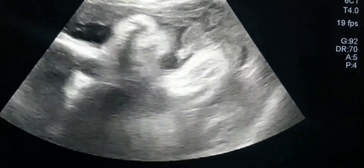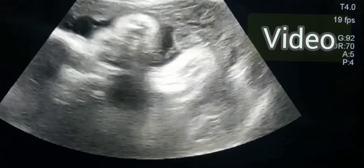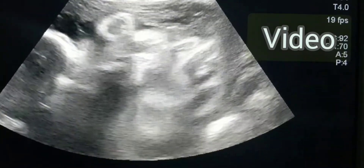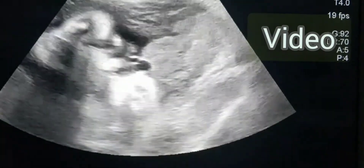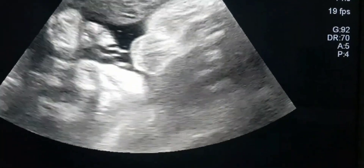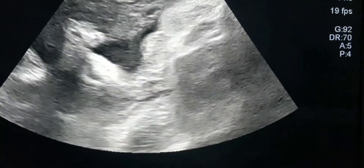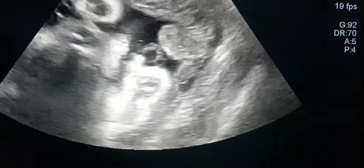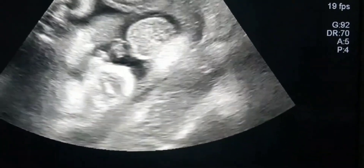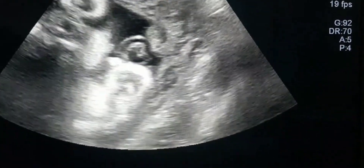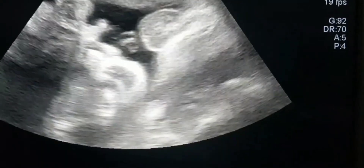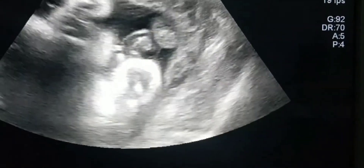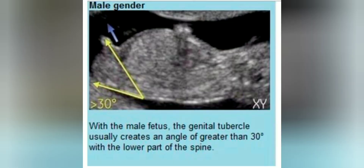You have to find the pelvic region and between both legs you can find the sex of the baby easily. Normally for a male baby you can find the scrotal sac and the penis, but if you are unable to find any scrotal sac then you can tell this is a female gender.